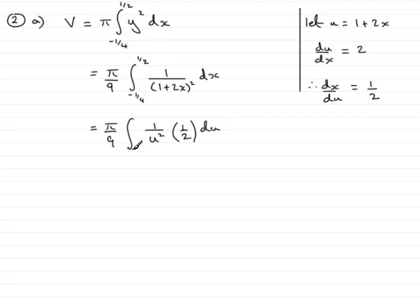You'll notice I haven't put the limits in yet. We need to work out what the limits are. When x is the lower limit, minus 1 quarter, we can substitute that into the equation, so we'd have 1 plus 2 times minus 1 quarter, so that's 1 minus 1 half, which is 1 half. Therefore u would equal 1 half.